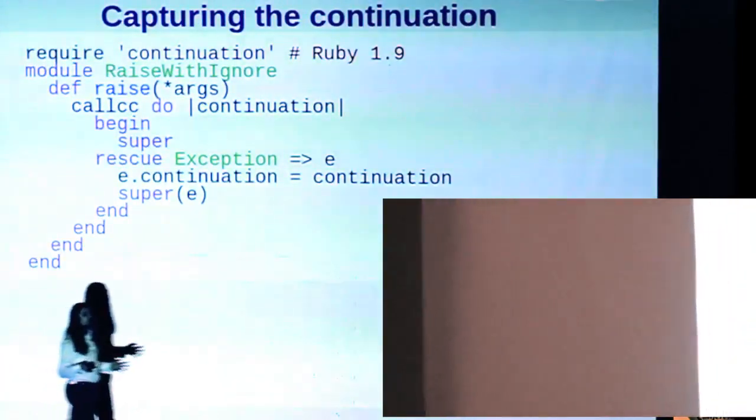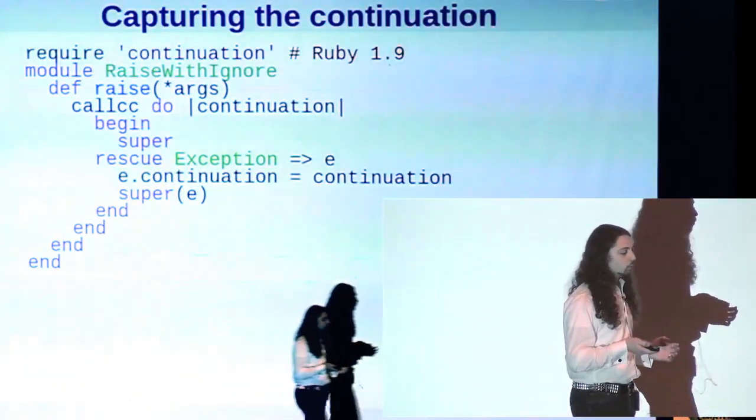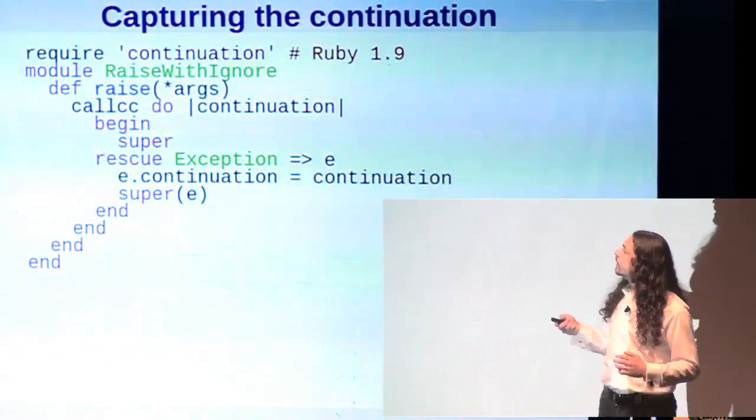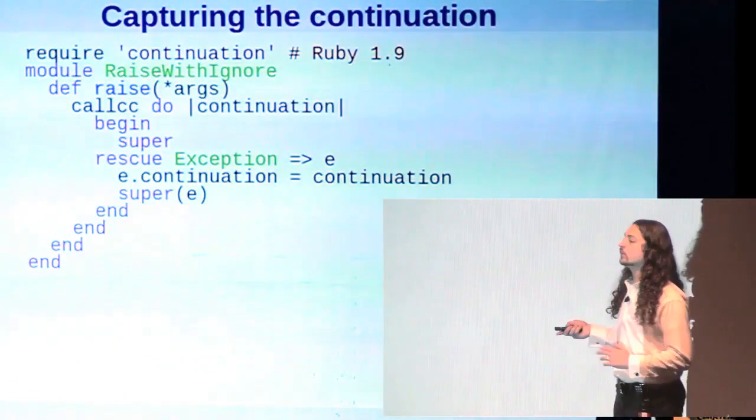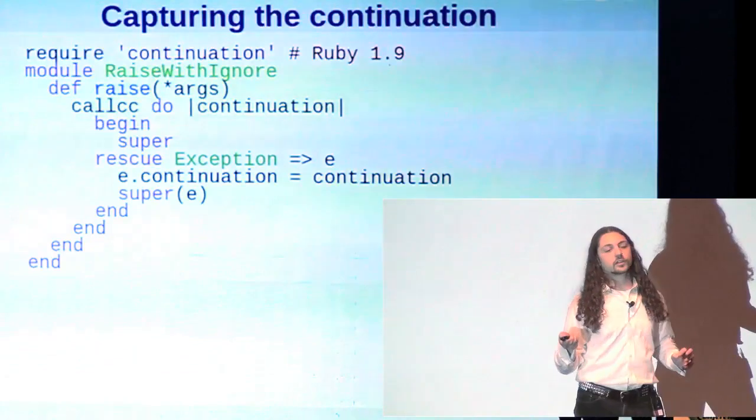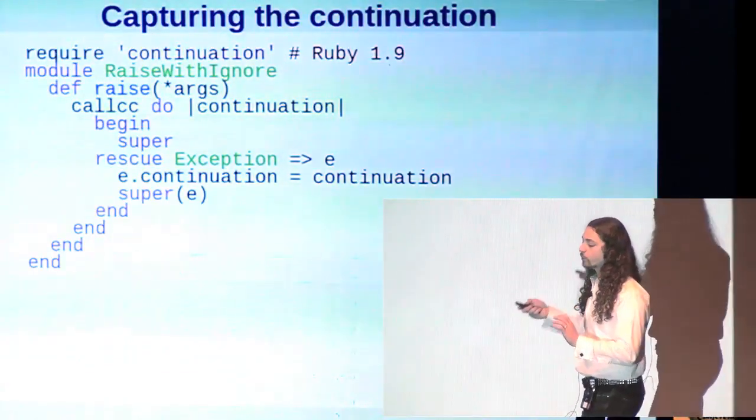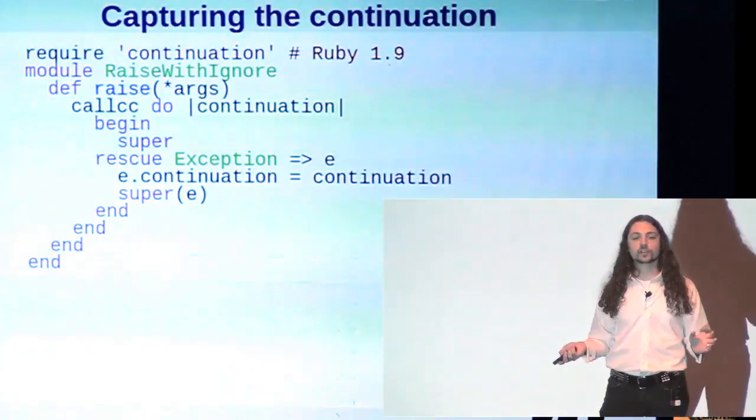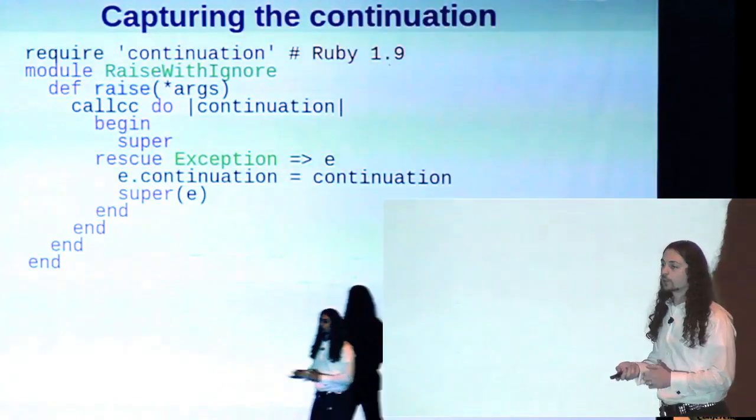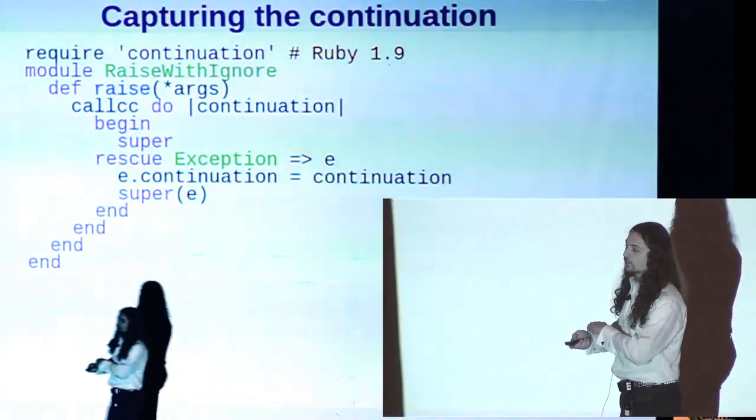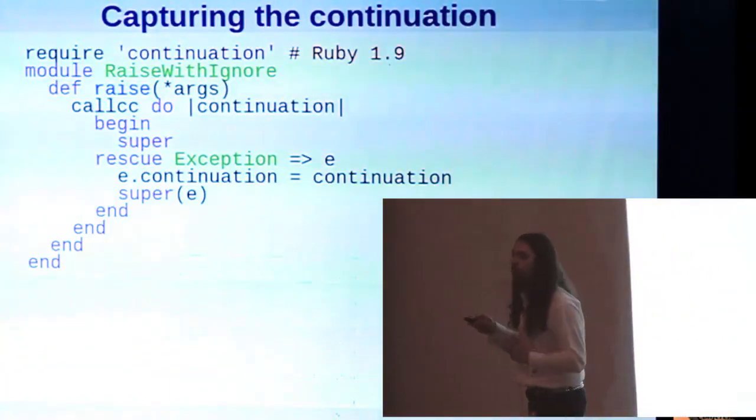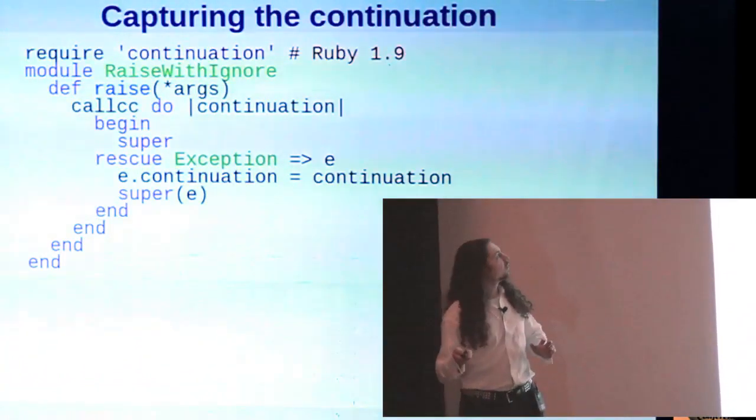Now here's the meat of it. Here is a redefinition of raise which surrounds the call to the original definition of raise in a call to call cc. Now call cc is call with current continuation. A continuation is, you can think of a continuation as like when you're reading a book and you realize that you need to reference something that you already passed. And so you stick your thumb where the page where you were reading and then you flip back to where you were. And then when you're done you flip back to where you put your thumb in. You can think of the continuation as that thumb in the book. So it's holding the place where this raise was called.